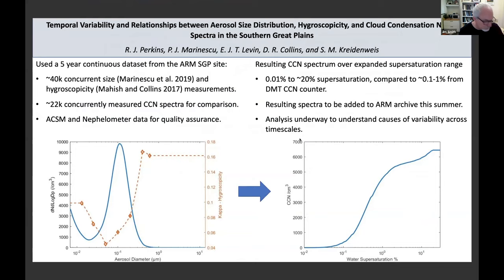Perkins, with Petters on deck. We're assembling a large dataset from ARM SGP into a CCN product, merging size distributions and hygroscopicity measurements, combining with measured CCN spectra, and applying QA/QC with ACSM and aethalometer data. This product should be ready to archive this summer. The key advantage over measured CCN spectra alone is greatly expanding the supersaturation range — getting down to very low supersaturation and quite high. We're currently analyzing the variability in this dataset.